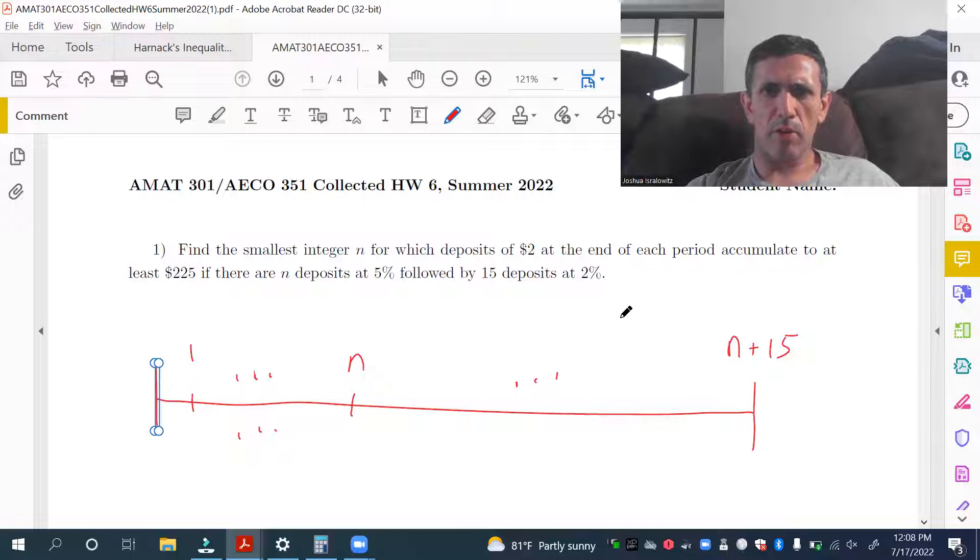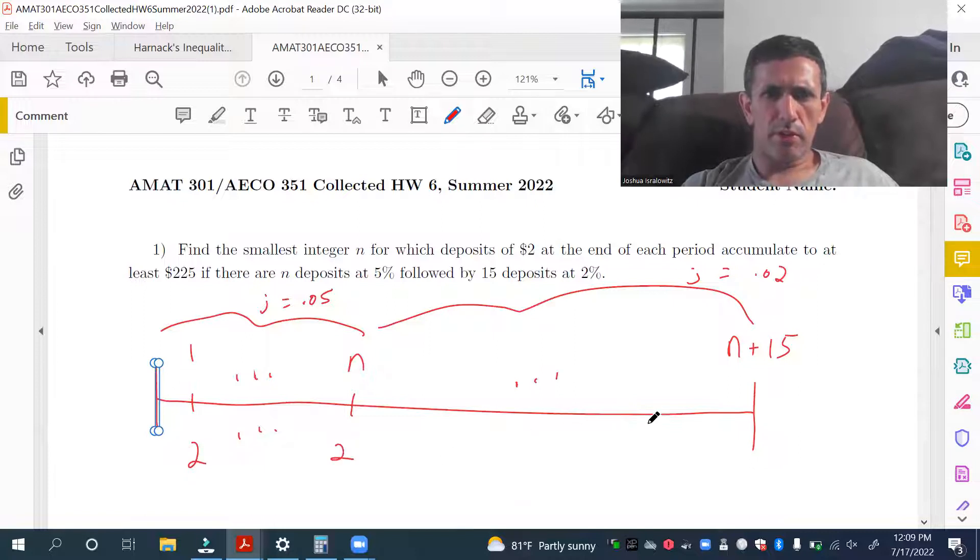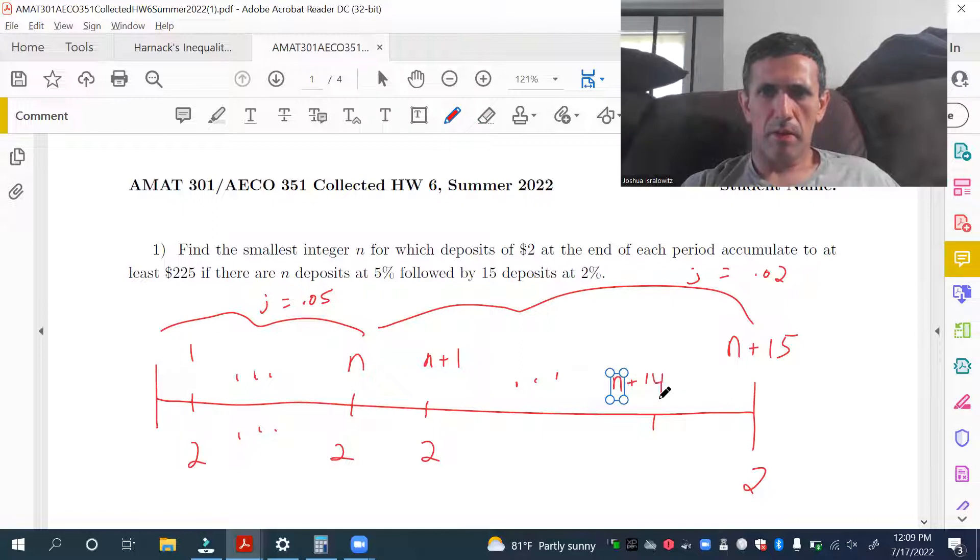It's a very simple time diagram. So we have end deposits at 5%. Well, it's per period. We don't know what periods are. We don't care. The per period interest rate is 5% for the first N periods. And then for the next 15 periods, N plus 15, it's 2%. It's just 2. Everything is 2. So I'll do N plus 1 here. Not that you really need this, but whatever. Make sure we're all on the same page here.